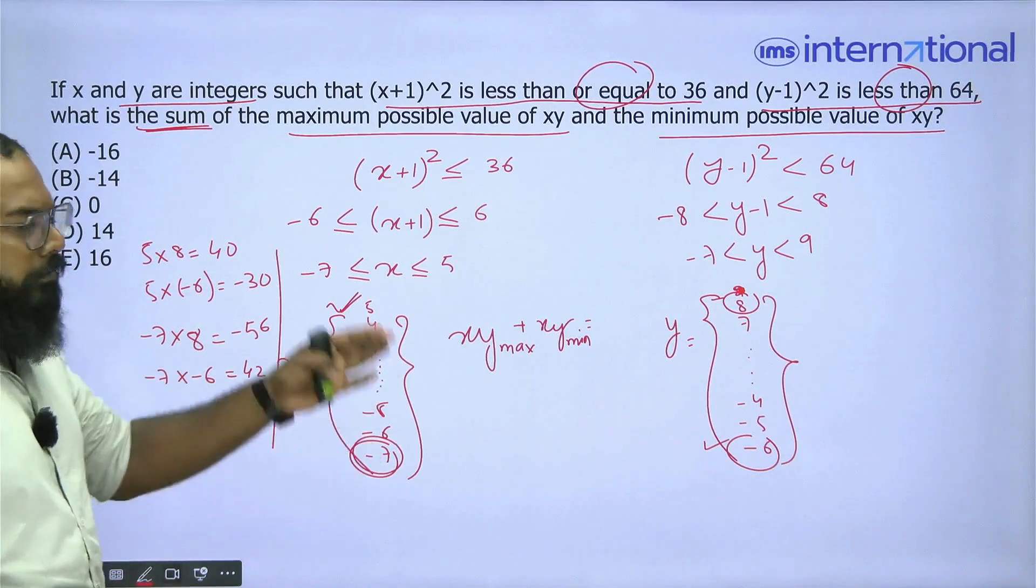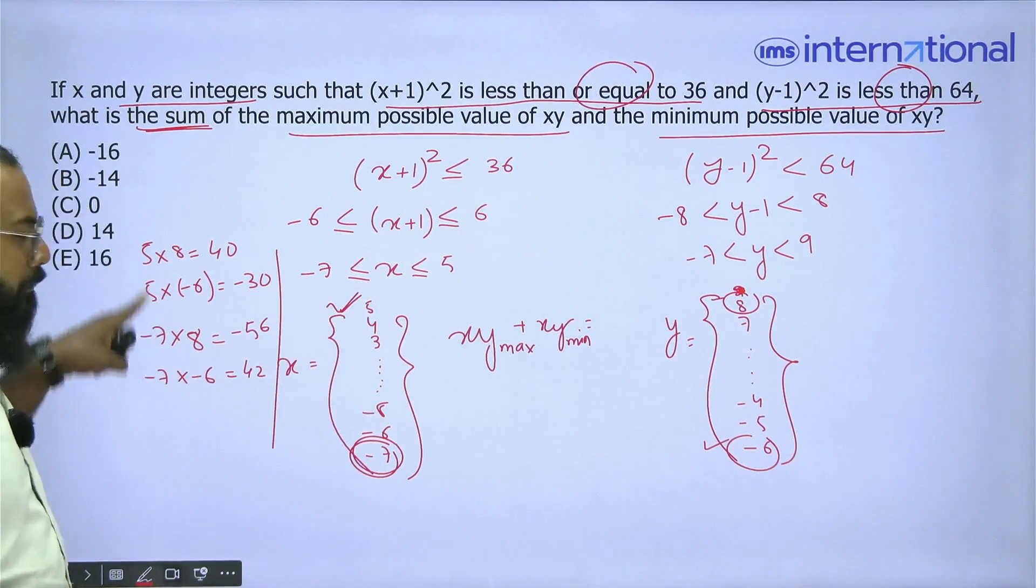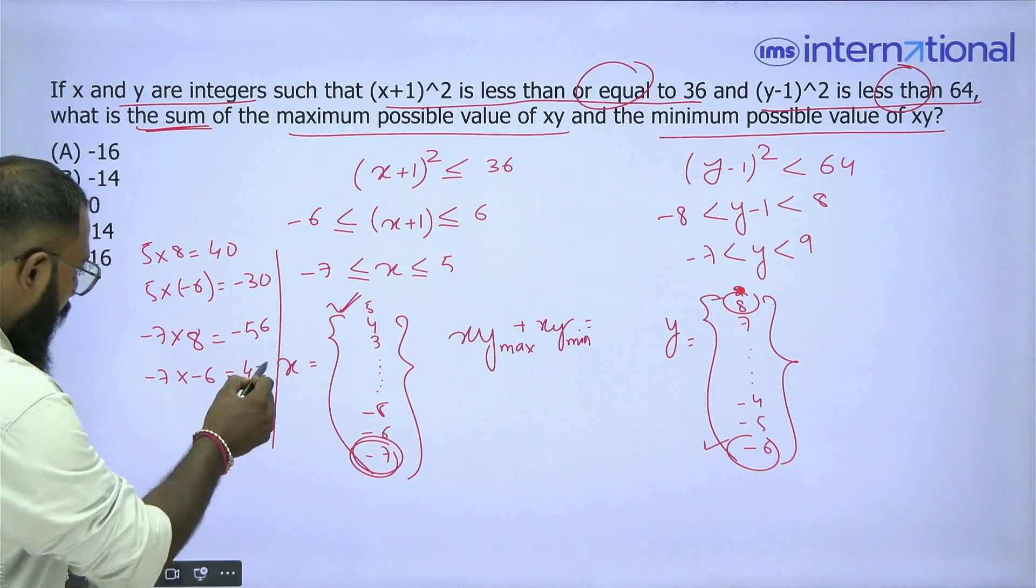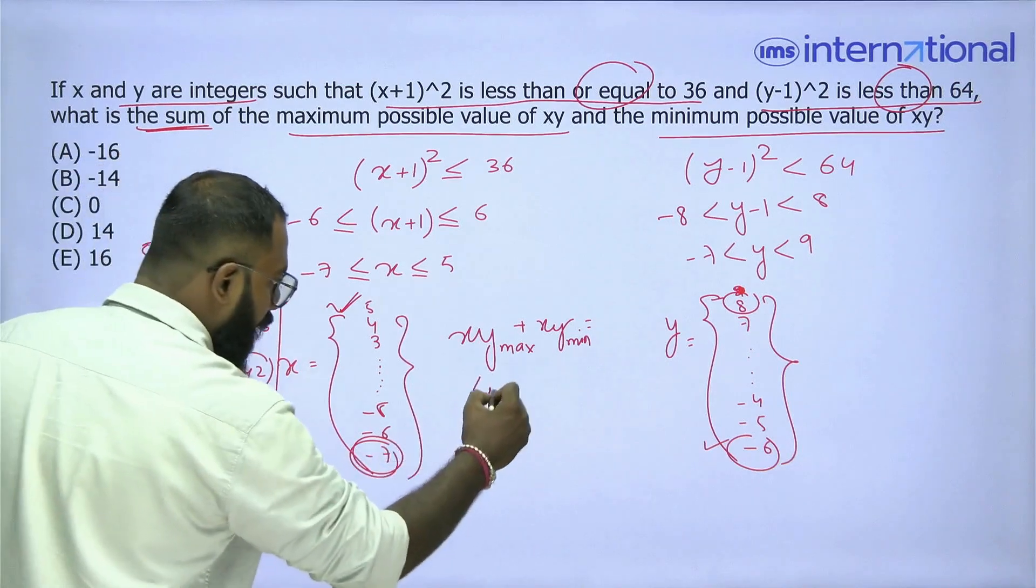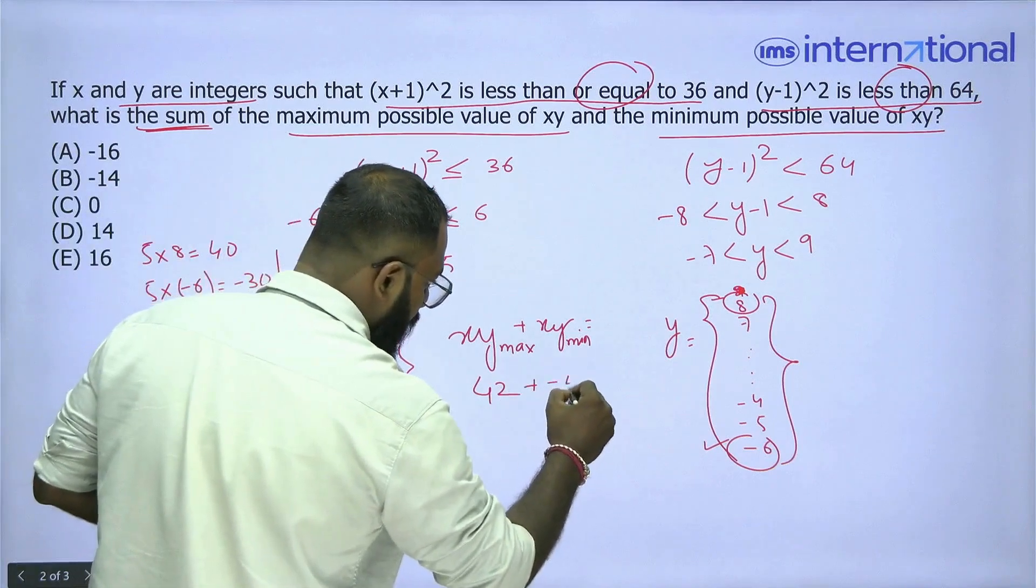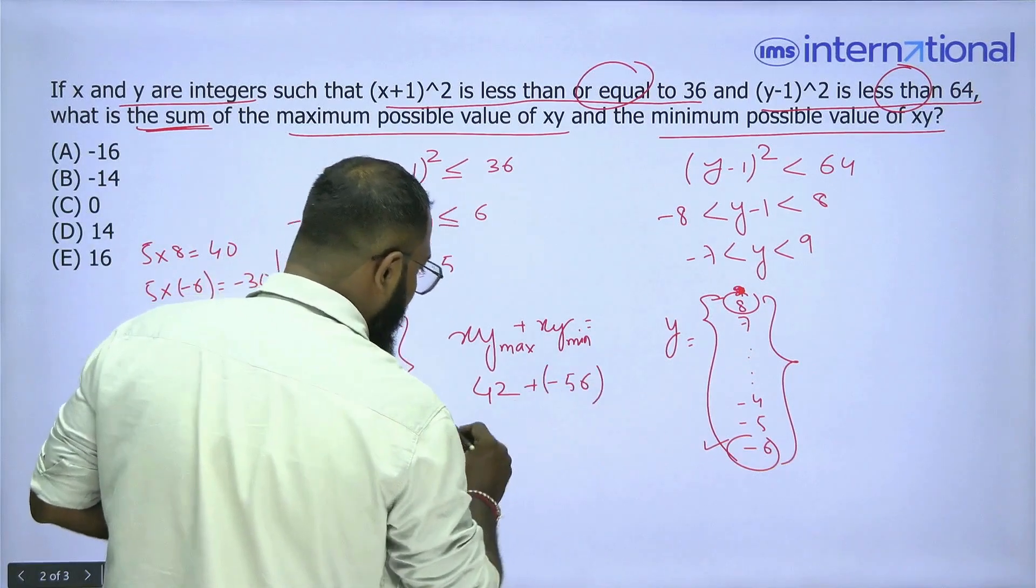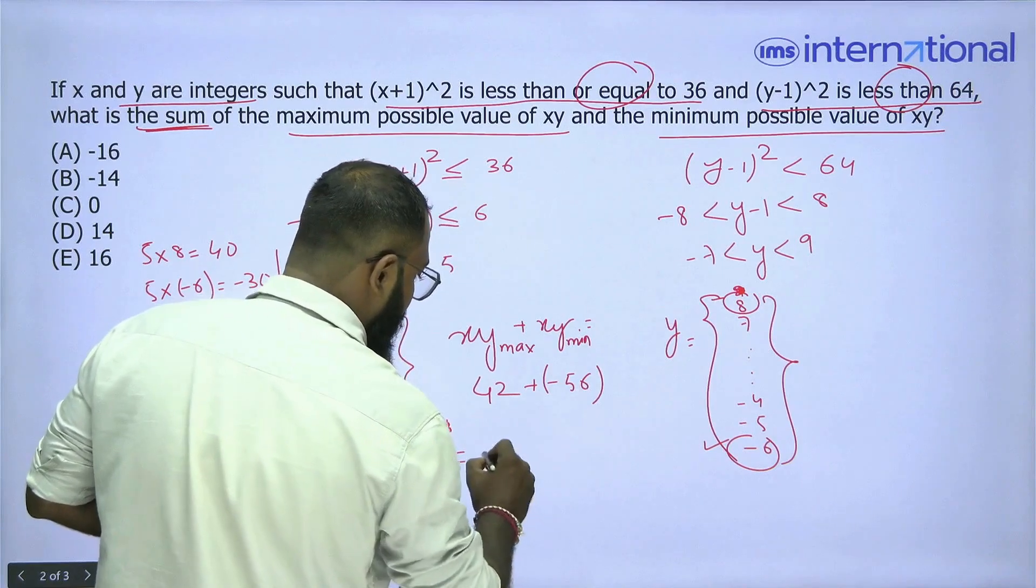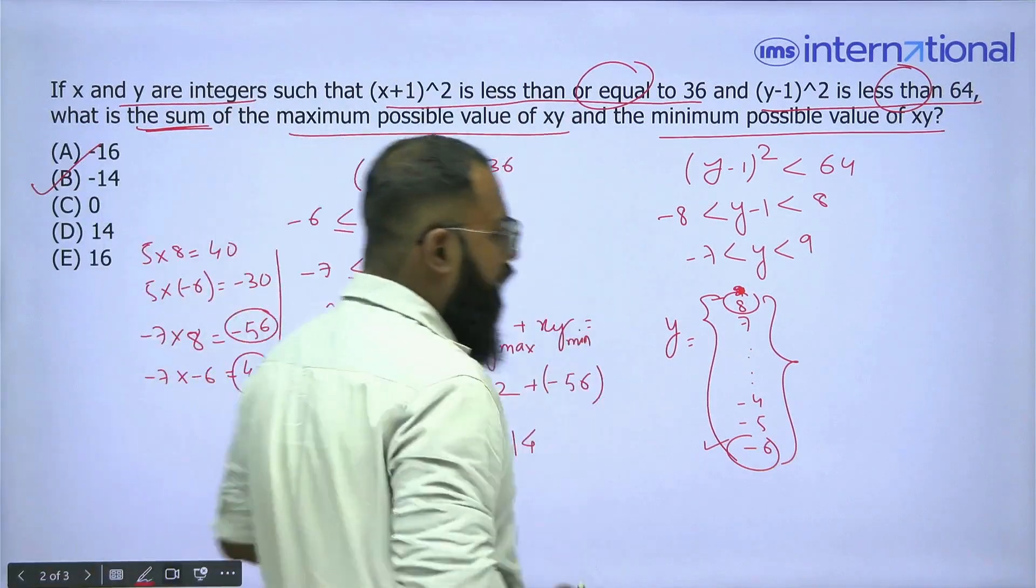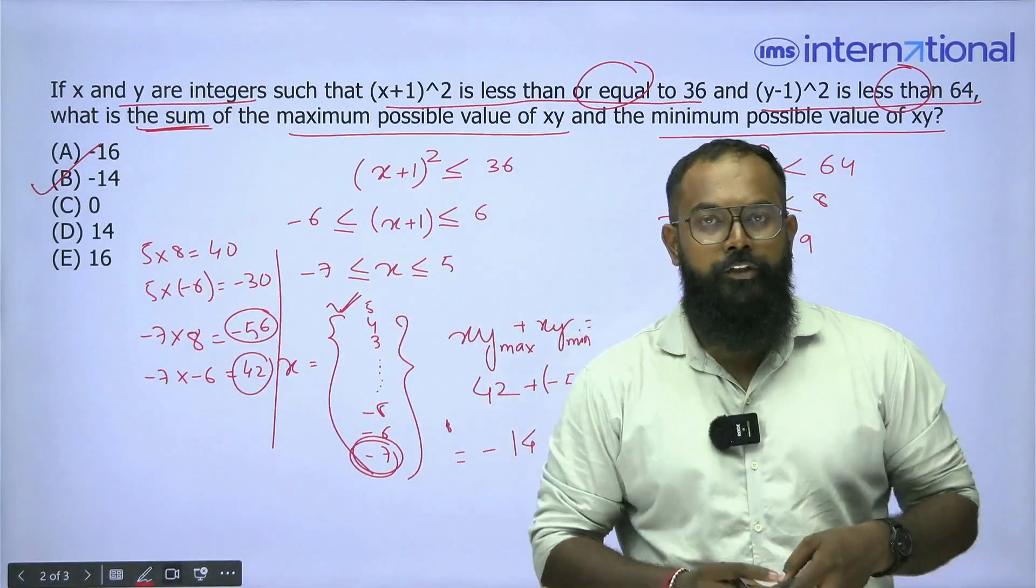Now the value of xy is going to lie between the maximum and minimum values of these products. So the maximum value is 42 and the minimum value is -56. I just need to find the sum of these two values, which is -14. That means the correct answer is -14, which is option number 2.